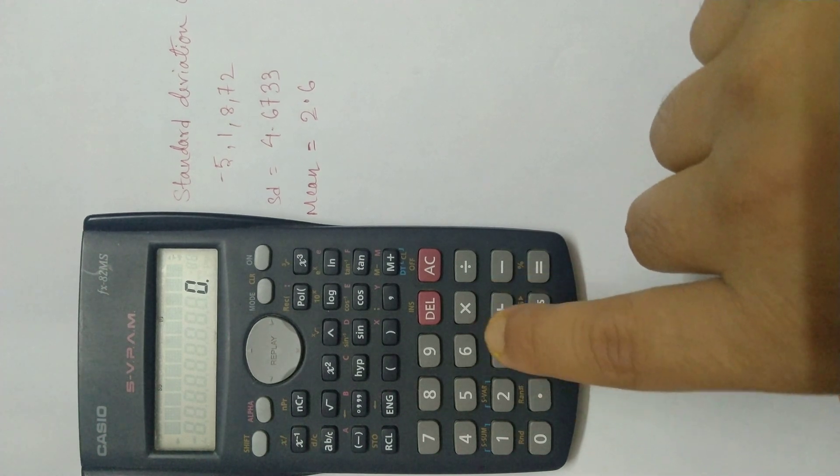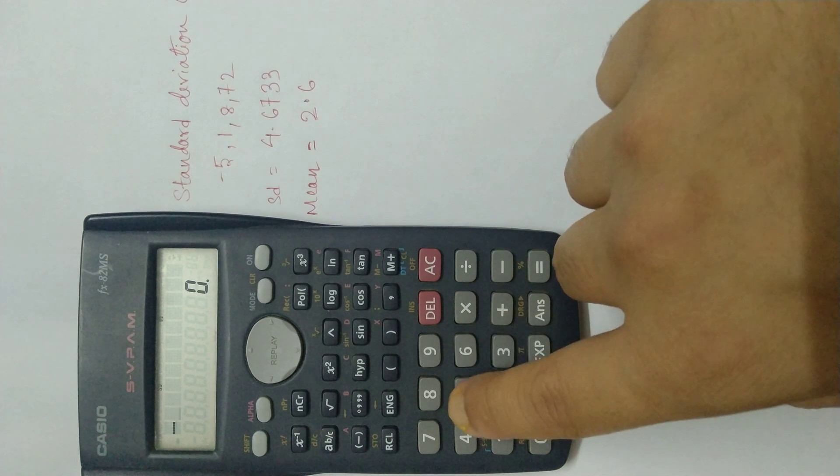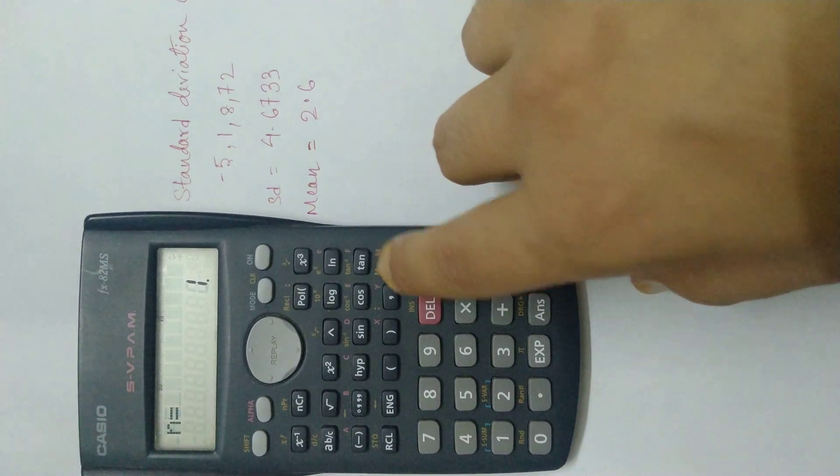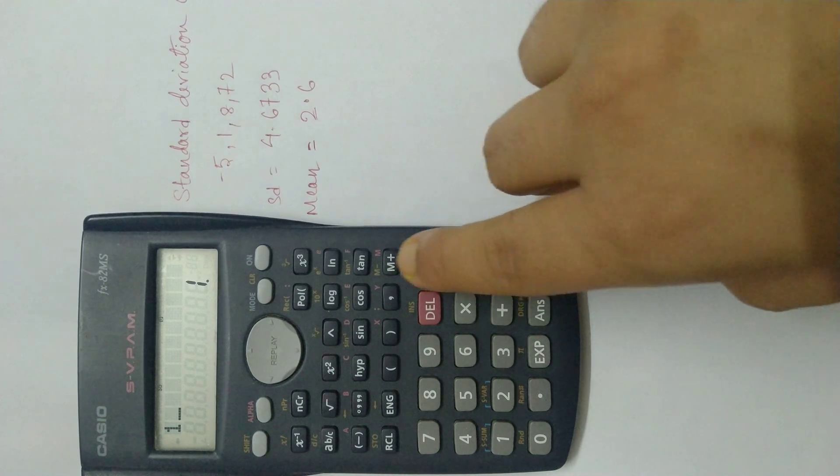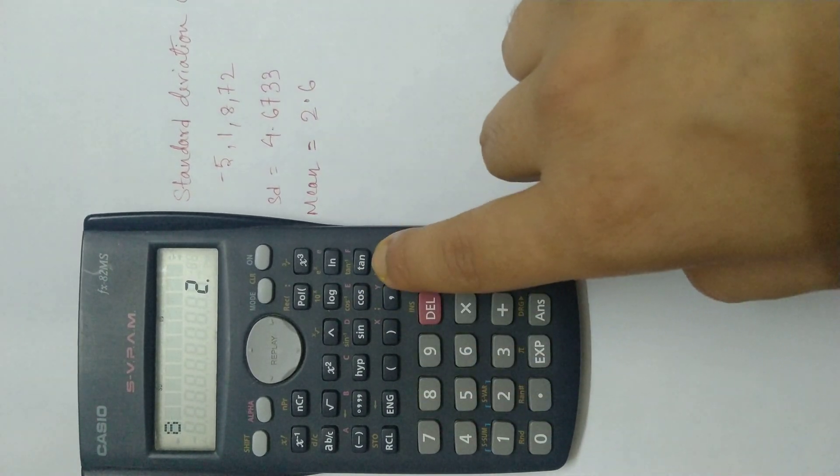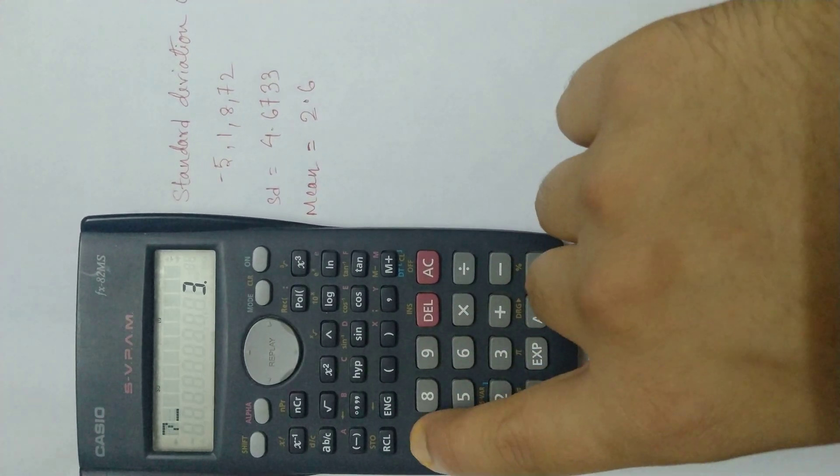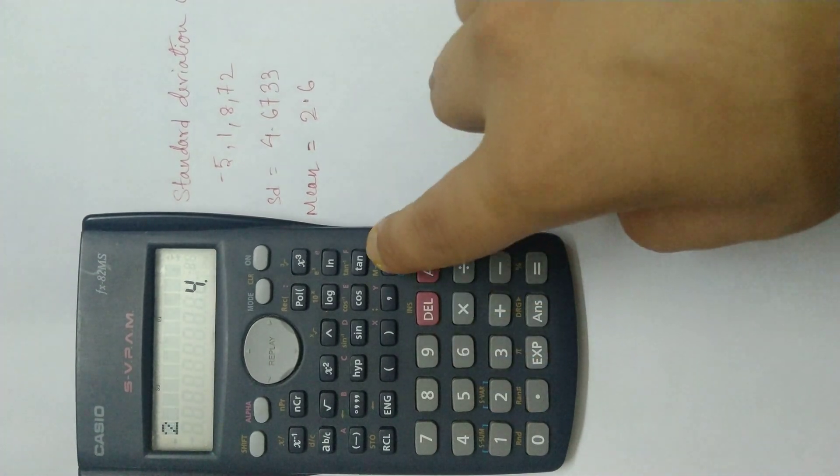First we press minus 5, then press M plus which means adding it to memory. Then 1, M plus. Then 8, M plus. Then 7, M plus. Then 2, then M plus.